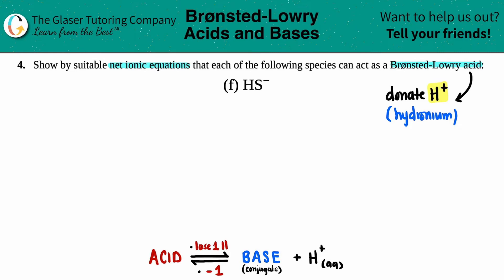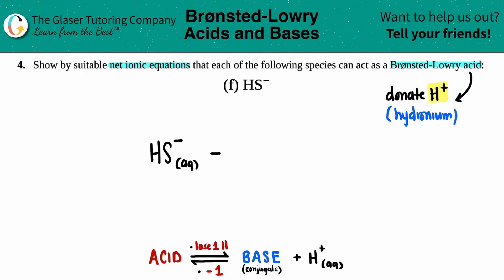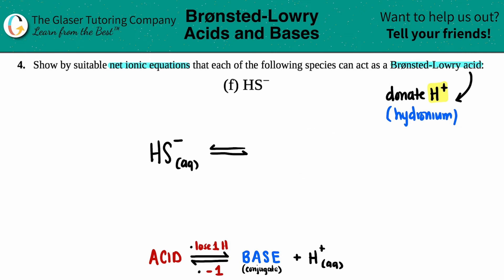We're going to start by writing our acid down. In this case, it's HS⁻. Since we're doing net ionic equations, we need states. Acids and bases are going to be in aqueous solution, AQ — they're in water. Since HS⁻ is not one of our six strong acids, I will write an equilibrium symbol here, which just means that they're at equilibrium — you'll have some of the reactants and some of the products.